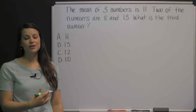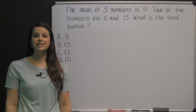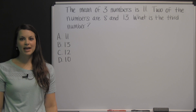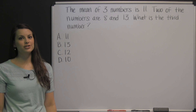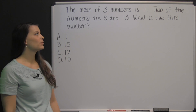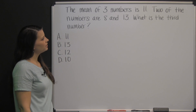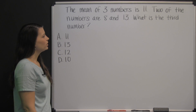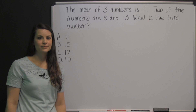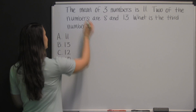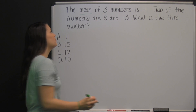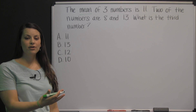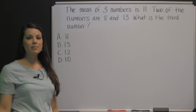This is a question from the applied mathematics section of the TABE practice test. On the applied mathematics section of the TABE exam, you will be allowed to use a four-function calculator, so keep that in mind as we work this problem. The mean of three numbers is eleven. Two of the numbers are eight and thirteen. What is the third number? First, we have to know what the word mean means — the mean is simply the average. To find an average, you add all of your numbers together and divide by the number of numbers you have.